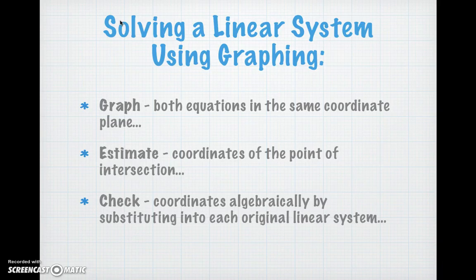So, in conclusion, when solving a linear system using graphing, first we have to graph both equations into the same coordinate plane. We then have to estimate the coordinates of the point of intersection, looking at where the two lines intersect. Then, lastly, we check our coordinates algebraically by substituting them into each of the original linear equations.